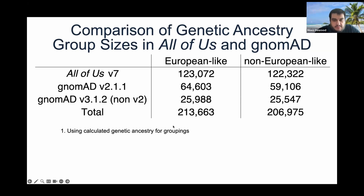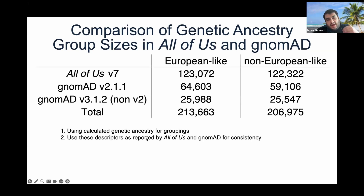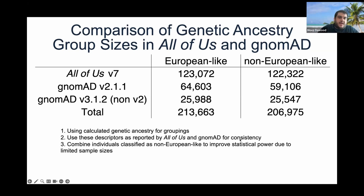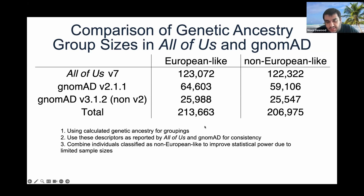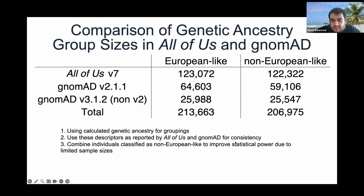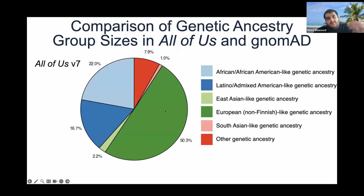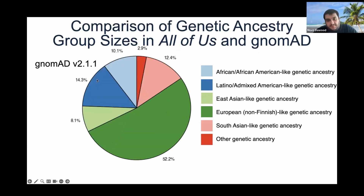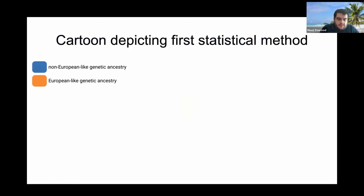What we use to classify individuals from the population databases into ancestral categories is based on calculated genetic ancestry, as reported by All of Us and gnomAD, for consistency. We're combining individuals classified as non-European-like to improve statistical power, creating a group of non-European-like genetic ancestry equivalent in number to individuals of European-like genetic ancestry. About 50% of the data is from individuals of European-like genetic ancestry, and cumulatively about 50% comes from individuals of non-European-like genetic ancestry — true across all three biobanks.